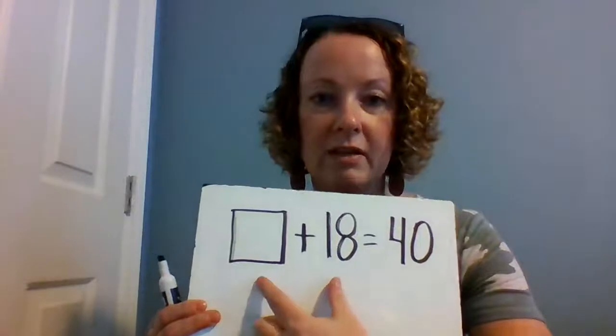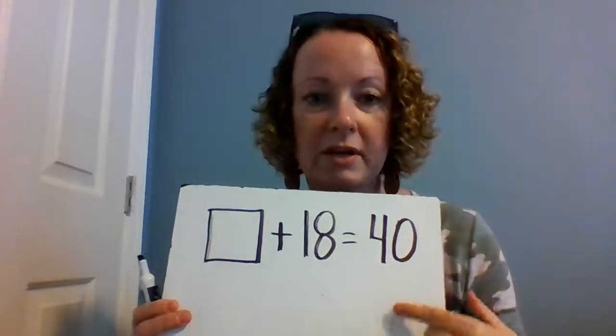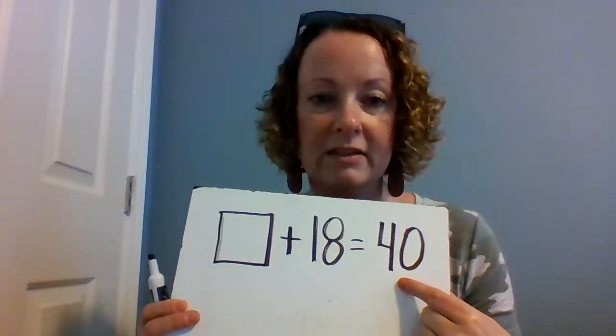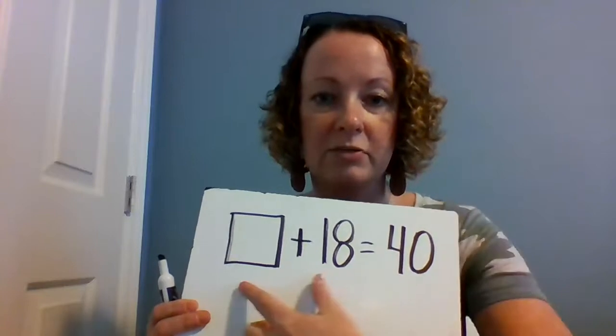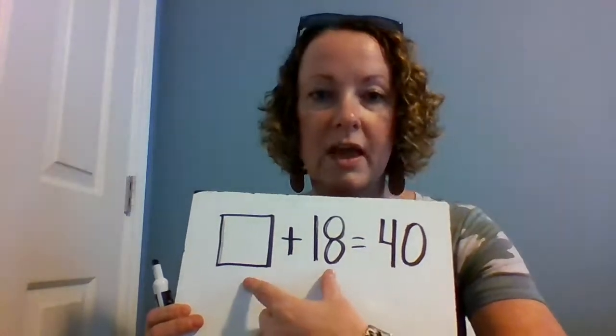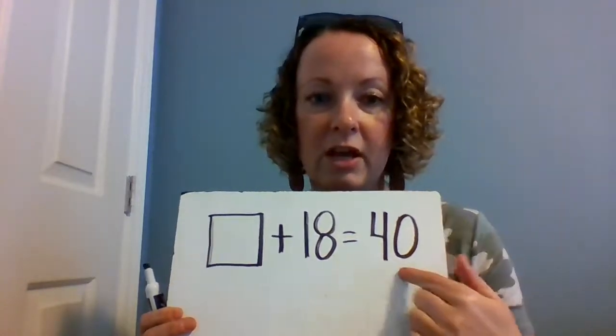Today we're only gonna work with addition. There will be another video coming out about missing numbers and subtraction problems. But let's remember that when we have an addition problem, the first two numbers, the ones around the plus sign, are always going to be the smaller numbers. The biggest number is going to come at the end after the equal sign because we're taking these two parts and putting them together in order to get the biggest number, the sum.